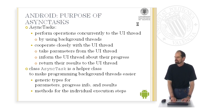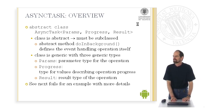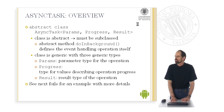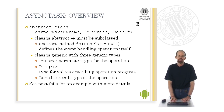AsyncTask provides methods for the individual execution steps. This class is abstract, so you must write a subclass to use it. There is an abstract method called doInBackground which defines the event handling operation and which you as the programmer have to implement. The class is generic and has three type parameters: first, Params — the type for the parameters of the operation; second, Progress — the type for the values describing the progress of the operation; and third, Result — the type of the result of the operation.